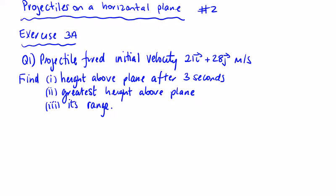In projectiles on a horizontal plane 2, we're going to look at Exercise 3a and a selection of questions. Question 1: the projectile is fired with initial velocity 21i + 28j meters per second. Find the height after three seconds, the greatest height, and its range.